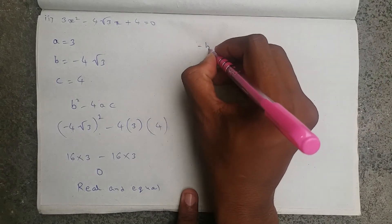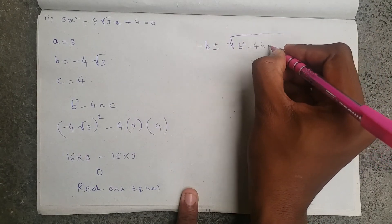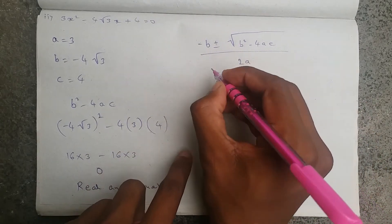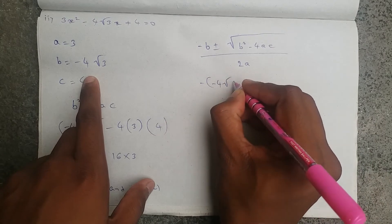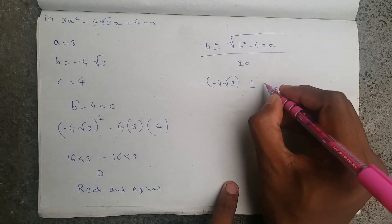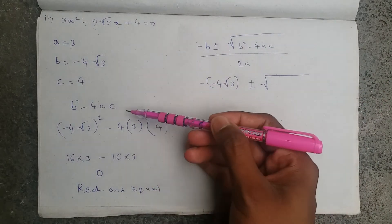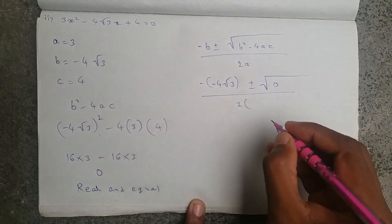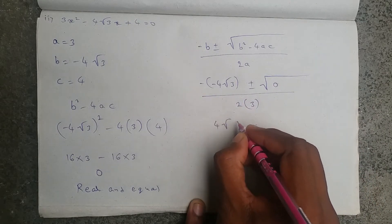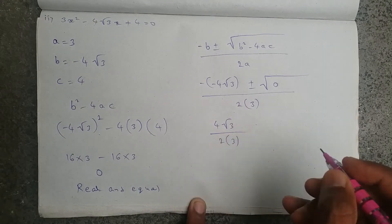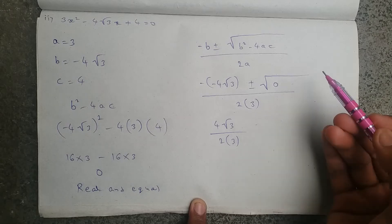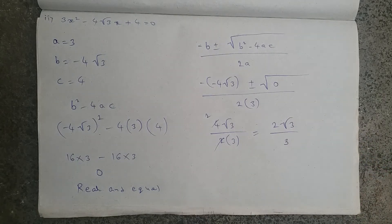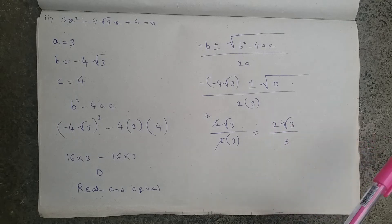Substituting the quadratic formula: minus b plus or minus under root b² - 4ac, whole divided by 2a. Here minus of minus 4√3, plus or minus under root 0, divided by 2 into 3. Under root 0 is 0, so we get 4√3 divided by 6. The final answer is 2√3 divided by 3. So the two zeros are 2√3/3 and 2√3/3.